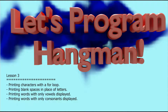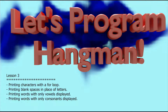Hello and welcome to lesson 3 in the Let's Program Hangman series. Today we're going to be looking at one final skill that's important to making a full game of hangman — printing out a string using a for loop. In hangman, you select a word and print it with blanks, then replace those blanks with correct letters as the user makes guesses. We'll use a for loop to draw blanks where letters should go.